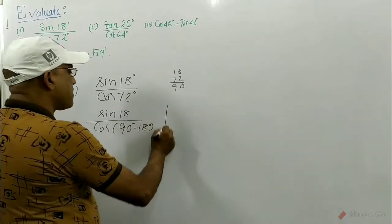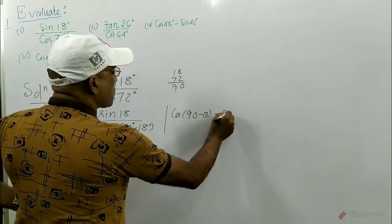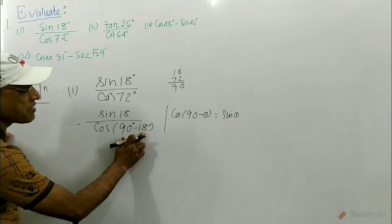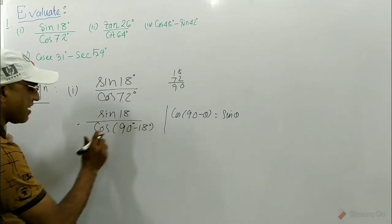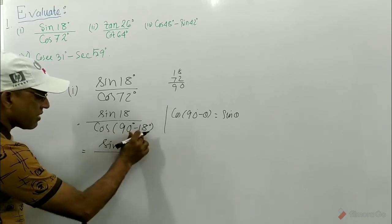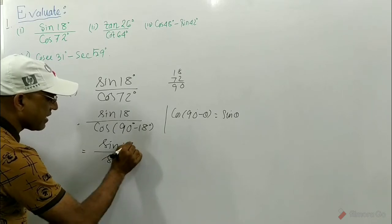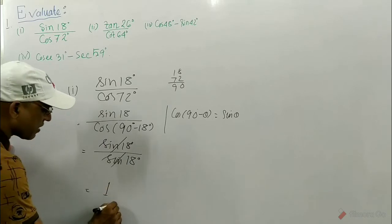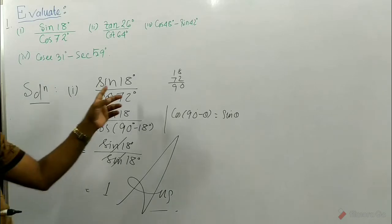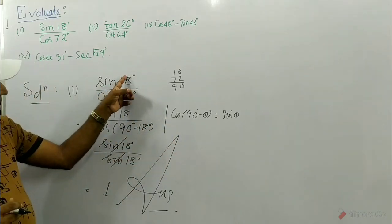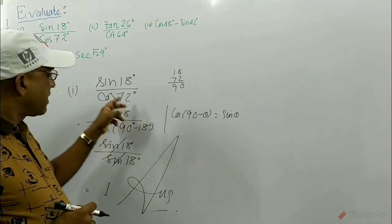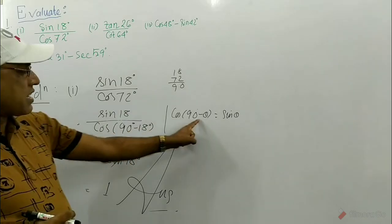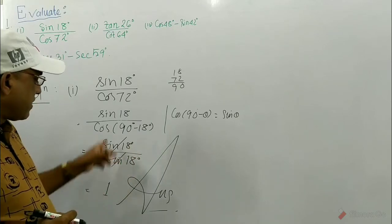Now we use the complementary angle relation: cos(90 - θ) = sin θ. We assume θ = 18°, so cos(90 - 18°) = sin 18°. The numerator sin 18° and the denominator sin 18° cancel each other. The answer is 1. You just have to remember whether the sum of the two angles is 90 or not — if it is, we can easily solve it.